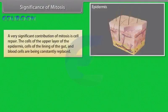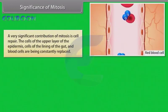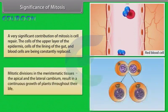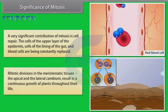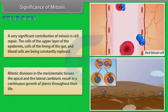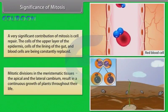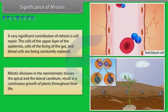A very significant contribution of mitosis is cell repair. The cells of the upper layer of the epidermis, cells of the lining of the gut, and blood cells are being constantly replaced. Mitotic divisions in the meristematic tissues, the apical and the lateral cambium, result in continuous growth of plants throughout their life.